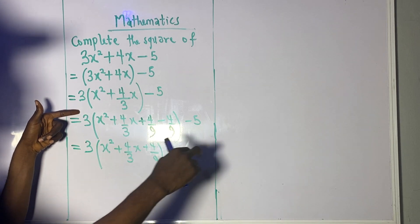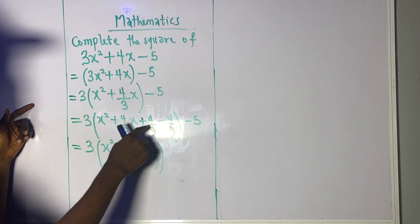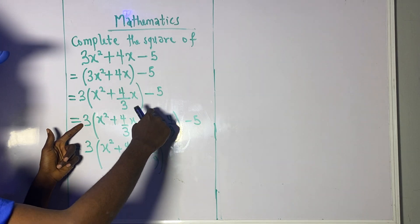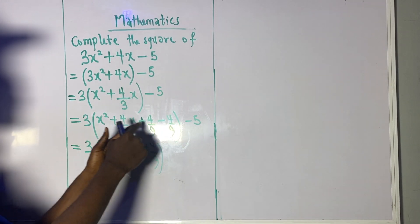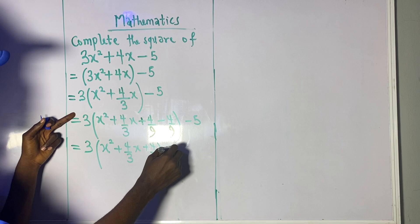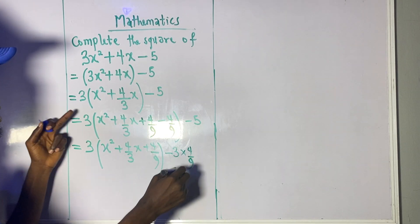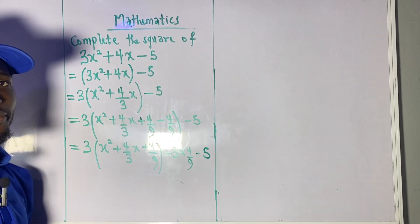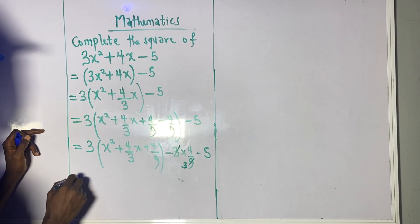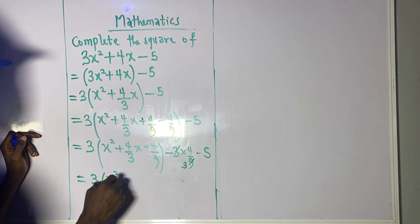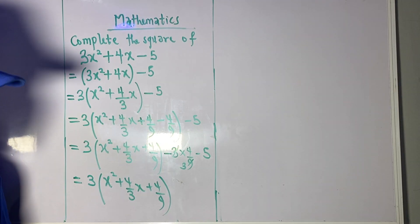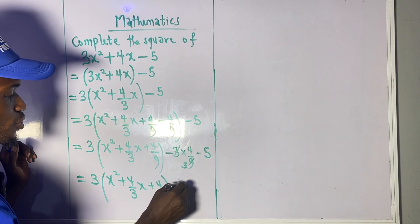What we have inside is a perfect square, but the −4/9 is going to be brought out of the bracket. Don't forget that the 3 outside affects everything — it multiplies everything inside. So the 3 has multiplied everything up to the +4/9 term, but it must also affect the −4/9 being taken out. That means we copy the minus sign: 3 times 4/9 = 4/3, which we bring out. Plus we still have minus 5 outside. Simplifying 3 × 4/9 = 4/3: so we have 3 brackets x² + 4/3 x + 4/9, then outside: −4/3 − 5.